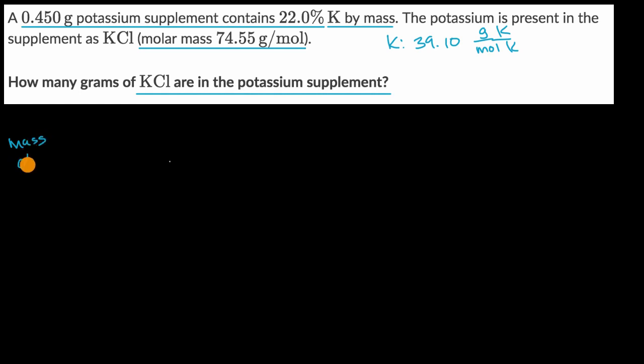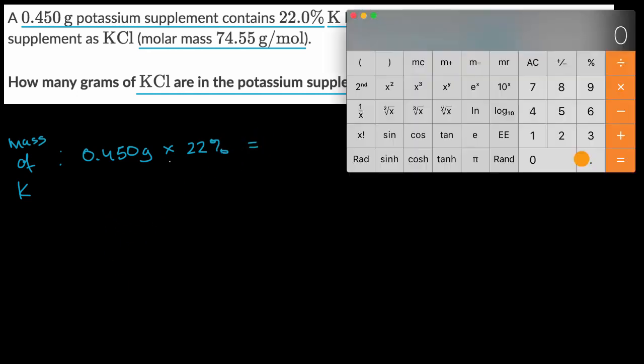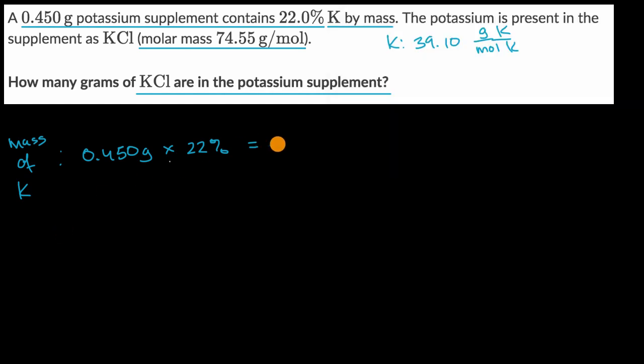So mass of potassium, that is going to be my 0.450 grams times 22%, which is going to be equal to, I'll get my calculator out, 0.450 times 22% or 0.22 is equal to 0.099. 0.099. So that's how many grams of potassium I have.